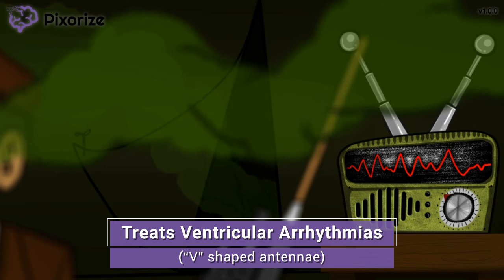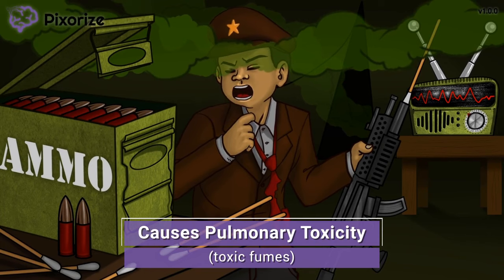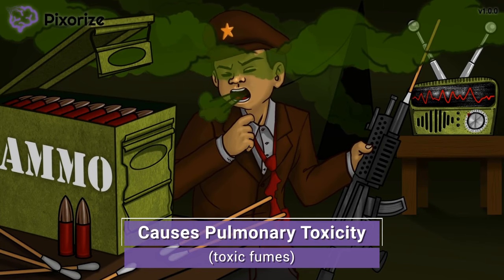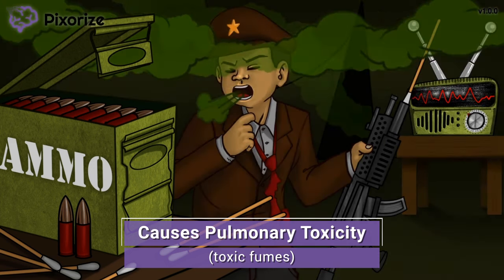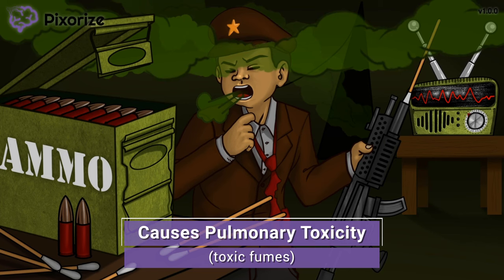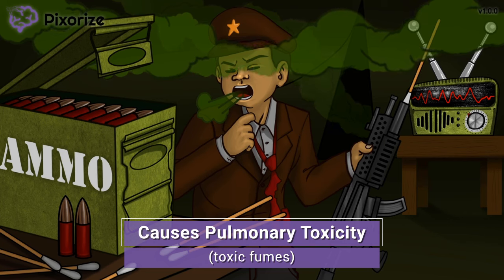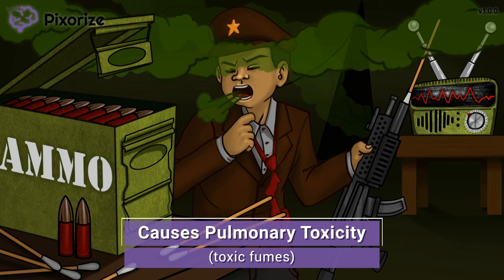Speaking of side effects, let's talk about those next. This soldier better hurry up and reload his gun because these fumes coming from the battlefront are toxic. See how he's already coughing and pulling at his collar? These toxic fumes causing a cough are our symbol for pulmonary toxicity. Just like breathing in toxic fumes makes it hard to breathe, amiodarone can cause pulmonary toxicity, which manifests as coughing, shortness of breath, chest pain, and crackles or rales in the lungs. Pulmonary toxicity is a very serious side effect, as hypoxia and respiratory failure can be fatal if not treated.